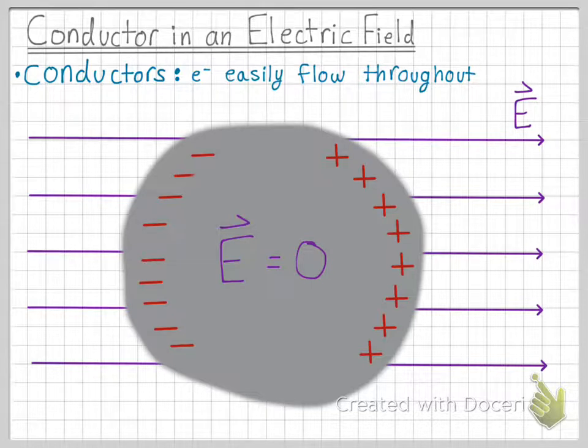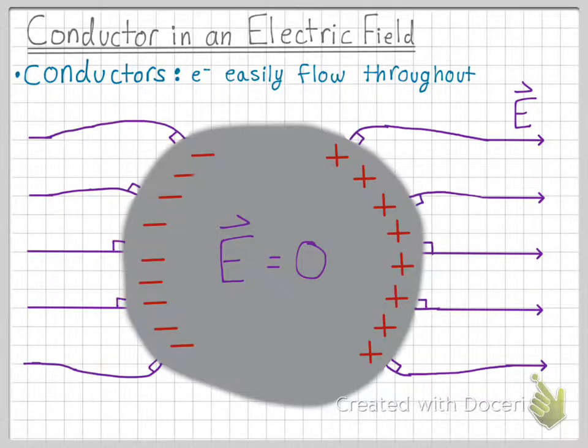And one important thing to note also is that the electric fields outside of the conductor then bend towards the conductor's outside, so that the electric field lines enter and exit the conductor at right angles.